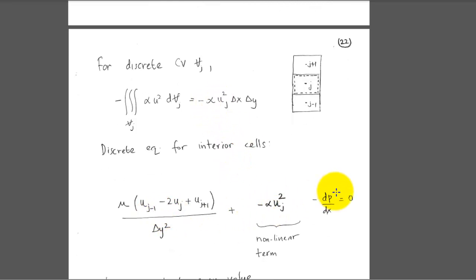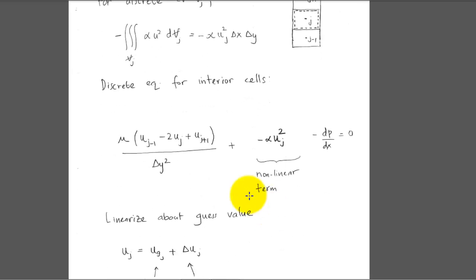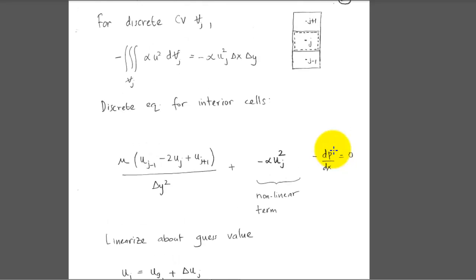That additional nonlinear term appears in the discrete equation for the j-th interior cell. We get the same terms as before for shear and pressure gradient, plus the new nonlinear term. Dividing through by Δx·Δy gives minus α·u_j². So we now have a nonlinear algebraic equation at each cell, meaning we have a system of simultaneous nonlinear algebraic equations to solve.